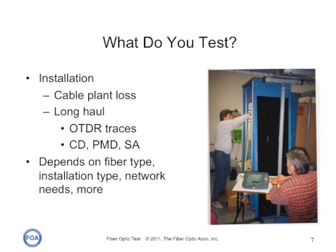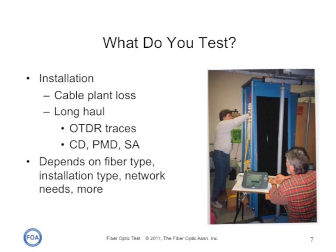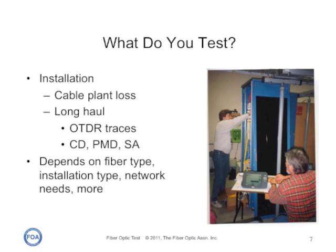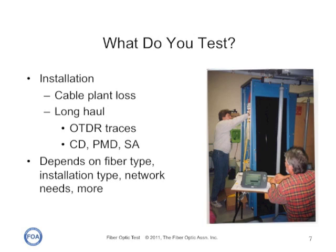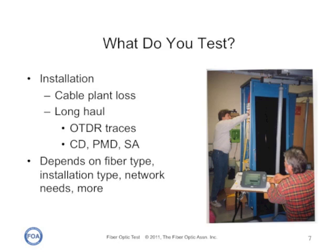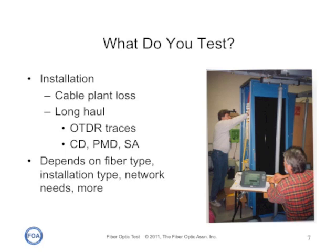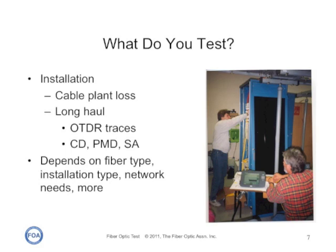The installer is going to look at the end-to-end cable plant loss, which will include all of the fiber, all of the connectors, all of the splices, all of the patch cords — everything that builds up the end-to-end cable plant that they'll be running the communication system on. For long-haul networks, they'll typically shoot OTDR traces so that there'll be a record of what the cable plant looks like, so if in the future they need to do restoration or troubleshooting, they have a record.